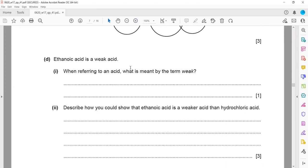Ethanoic acid is a weak acid. When referring to an acid, what is meant by the term weak acid? The term weak acid means the acid which ionizes partially.